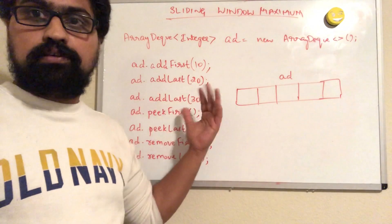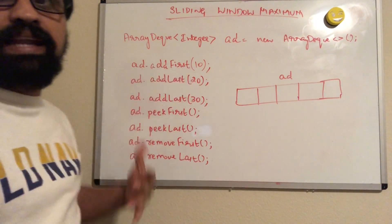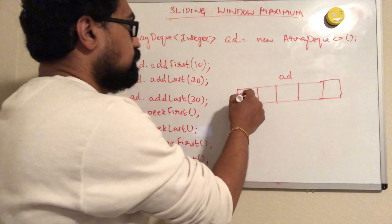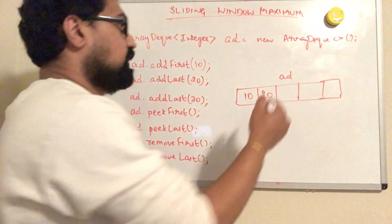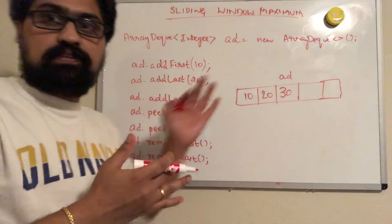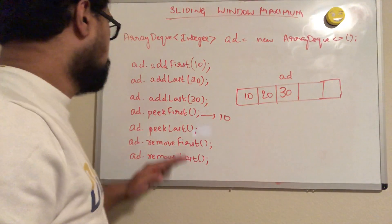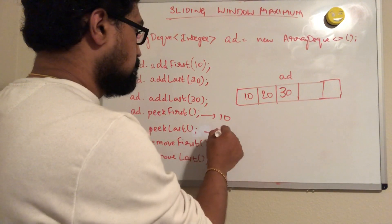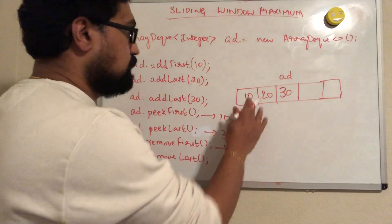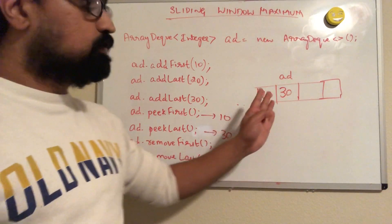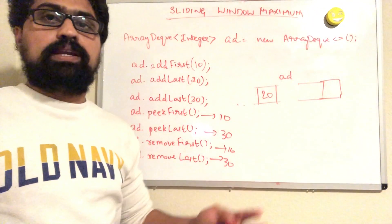Let us understand ArrayDeque by looking at some of its methods. We initialize ArrayDeque in Java as AD. AD.addFirst will add elements to the front of the ArrayDeque. AD.addLast will add to the end of the deck. peekFirst will look at the first element without removing it, giving us the value at the front. peekLast will give us the value at the end. removeFirst removes the front element and returns that value. removeLast removes the last element and returns that value. These are the key methods.